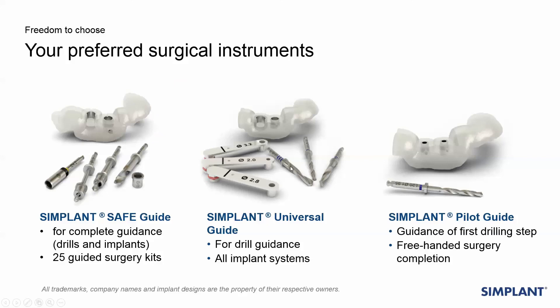Our next guide option would be the universal guide. This is semi-guided up to three diameters — so it's only depth control, not orientation control. Any further diameters you would need to control manually by purchasing additional keys that closely resemble the diameters of your manual surgical kit. Because it's a universal guide you can use it with any implant system, as it starts you off and then you finish manually with your surgical kit to comply with the protocols of that individual implant system.